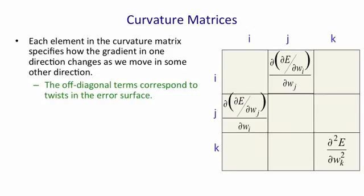So the off-diagonal terms in a curvature matrix correspond to twists in the error surface. A twist means when you travel in one direction, the gradient in another direction changes. If we have a nice circular bowl, all those off-diagonal terms are zero. As we travel in one direction, the gradient in other directions doesn't change.